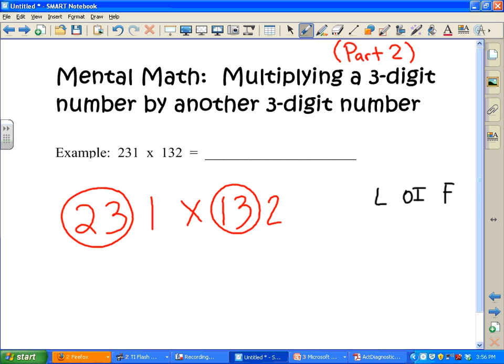If we do the last with the last, 1 times 2, our answer has to end in 2. Then we do the outer and inner. That means we multiply 1 times 13 plus 23 times 2. That's 46 plus 13, which is 59. So you write a 9 and carry a 5.